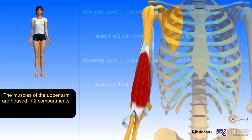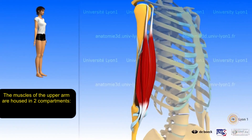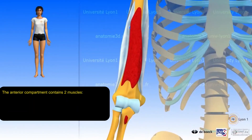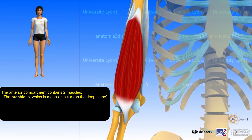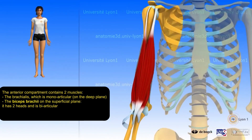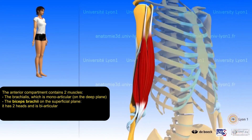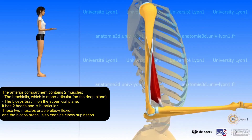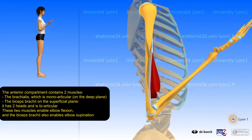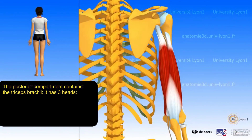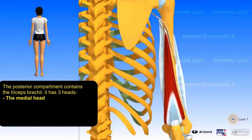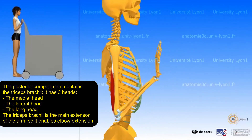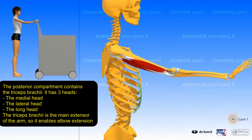Arm muscles. The muscles of the upper arm are housed in two compartments. The anterior compartment contains two muscles: the brachialis, which is monoarticular on the deep plane, and the biceps brachii on the superficial plane, which has two heads and is biarticular. These two muscles enable elbow flexion, and the biceps brachii also enables elbow supination. The posterior compartment contains the triceps brachii, with three heads — medial, lateral, and long — and it is the main extensor of the arm, enabling elbow extension.